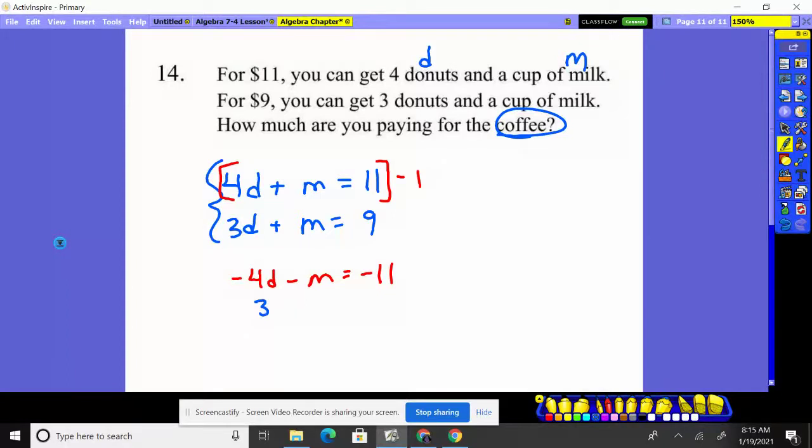We'll add that with 3D + M = 9. Now things will disappear when we add them. The Ms go away, equals -2.